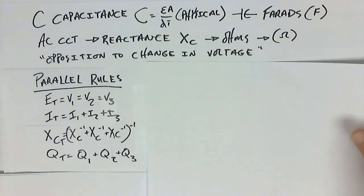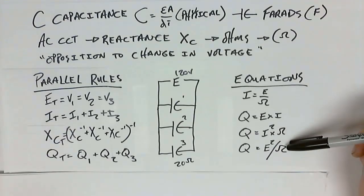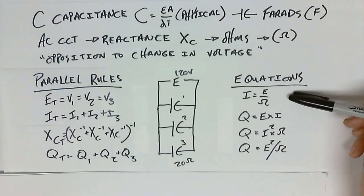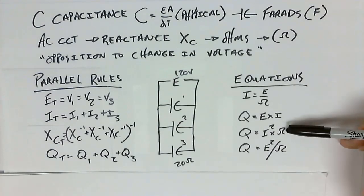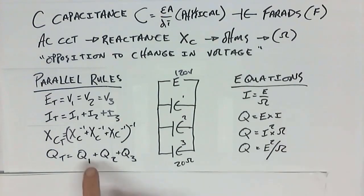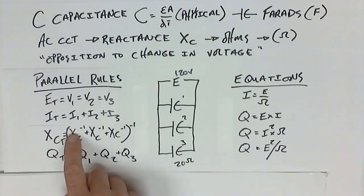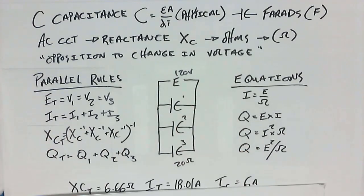The equations used to calculate these values are the same ones we've worked with: I equals E over ohm for Ohm's law; Q is the VARs of capacitive reactive energy; I squared times ohms; and E squared over ohms — using the ohms of capacitive reactance. With a 120-volt source, three capacitors at 20 ohms each: XC total is 6.66 ohms, I total is 18.01 amps, and current through one capacitor is 6 amps.